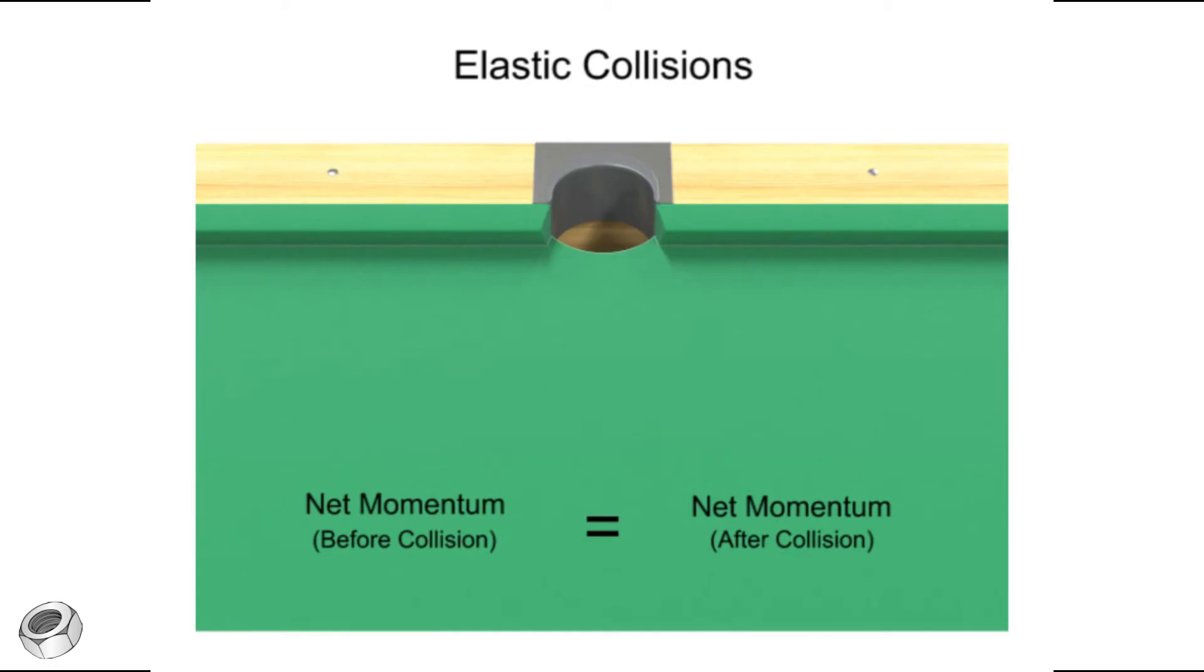If the eight ball and the cue ball are traveling at the same speed and collide head-on, then they will bounce off of each other with the same momentum, but in opposite directions. Their momentum and kinetic energy are transferred and conserved.